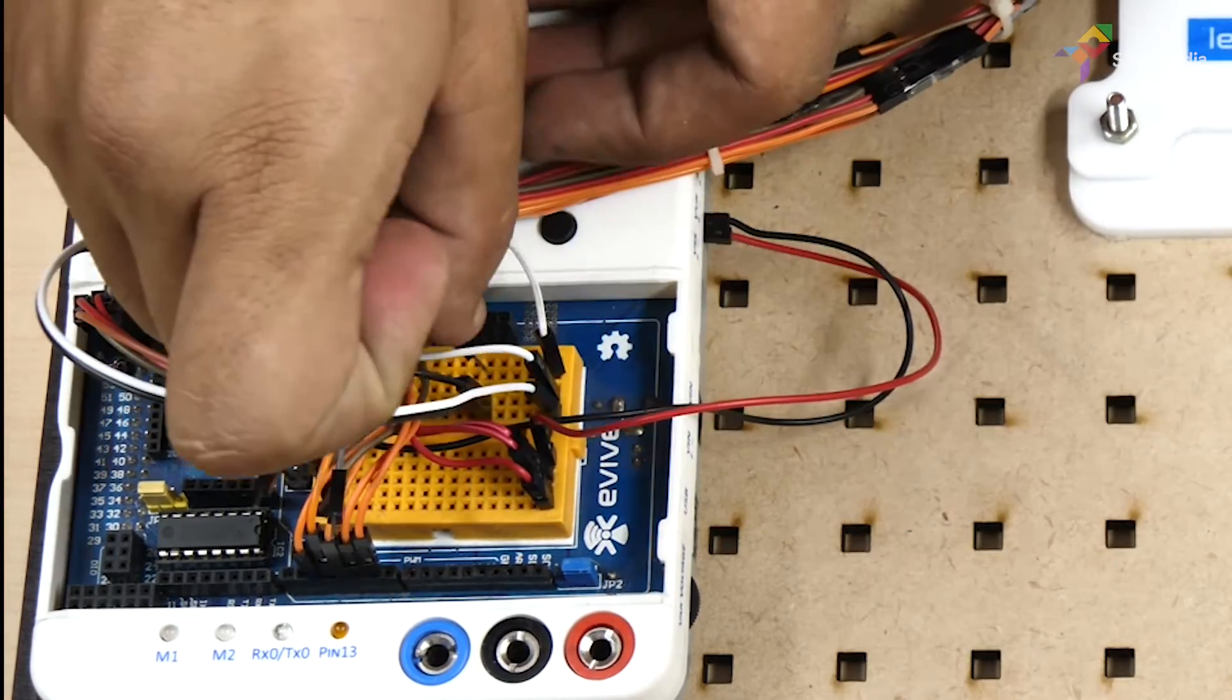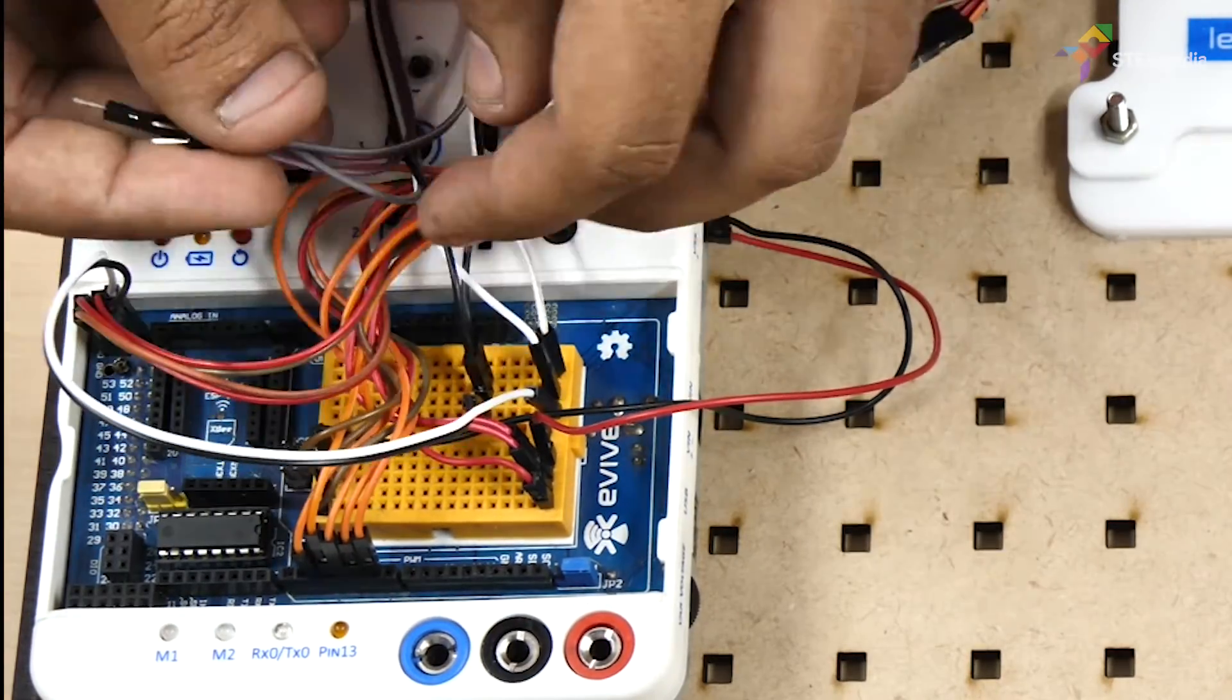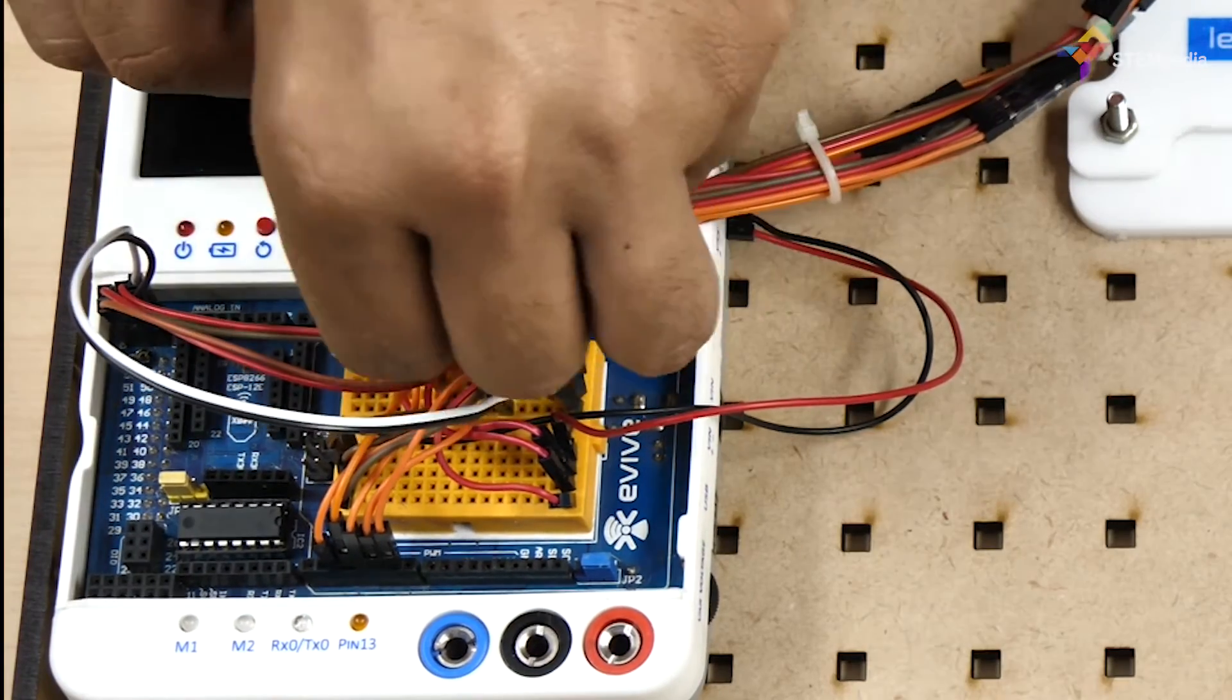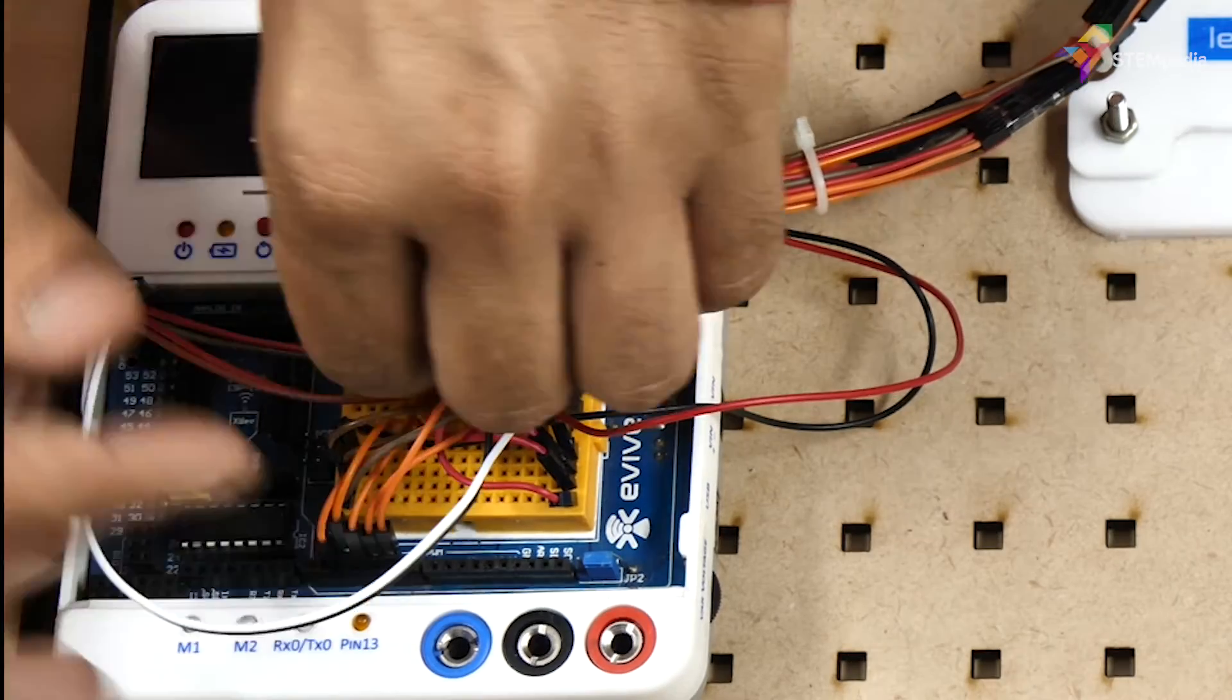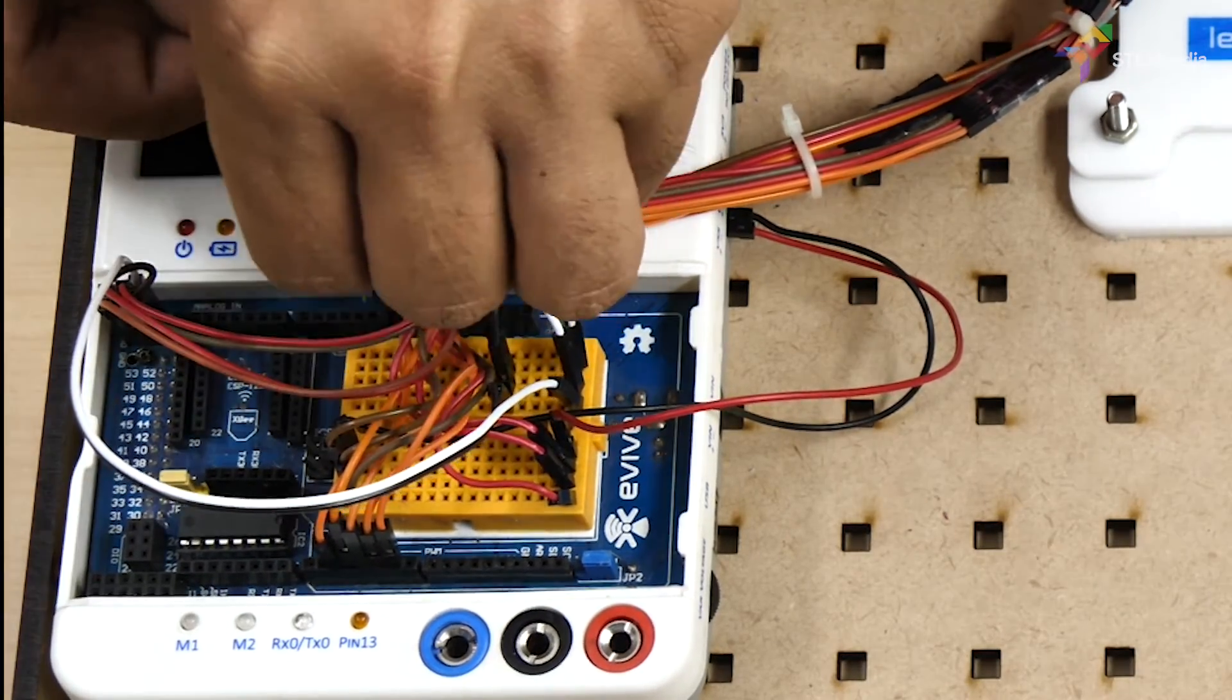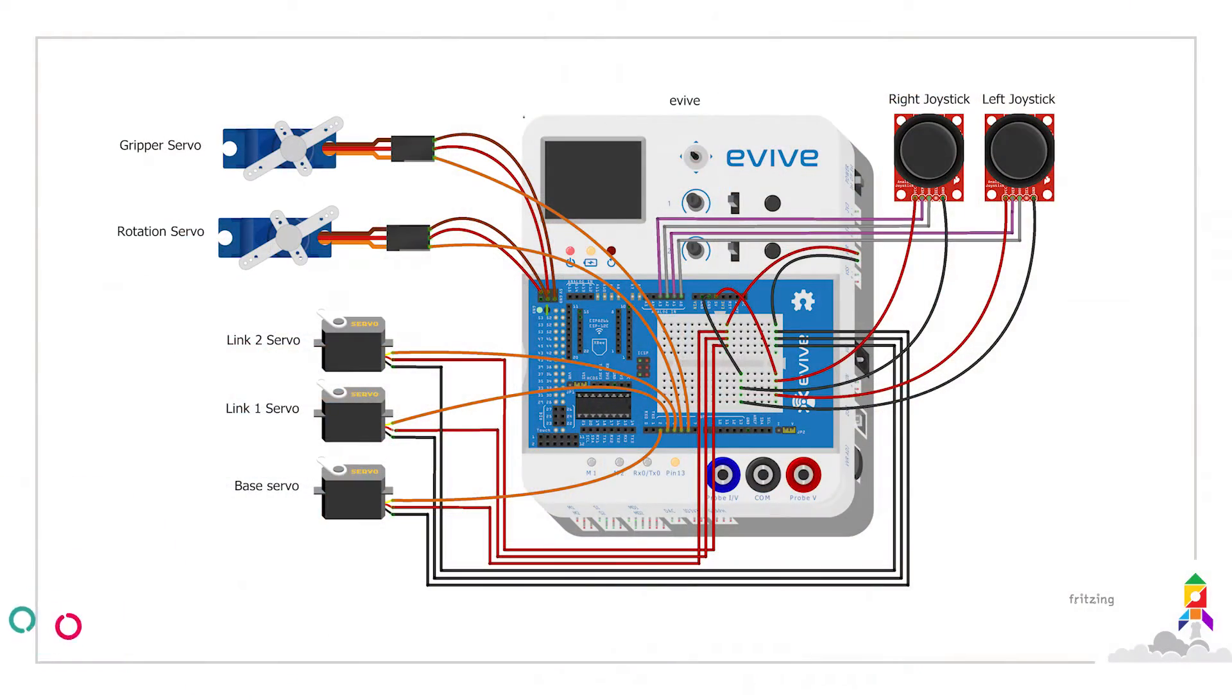The joystick on the left is Joystick 1 and on the right is Joystick 2. Connect VRY of Joystick 1 to evive's A0 pin. Connect VRX of Joystick 1 to evive's A1 pin. Connect VRY of Joystick 2 to evive's A2 pin. Connect VRX of Joystick 2 to evive's A3 pin.